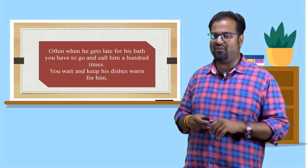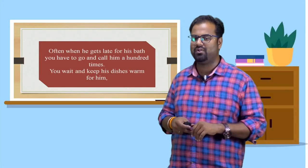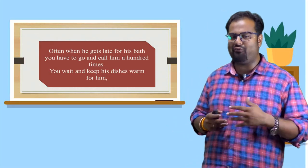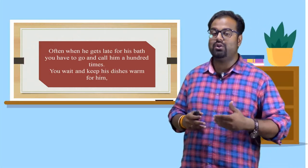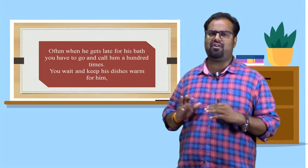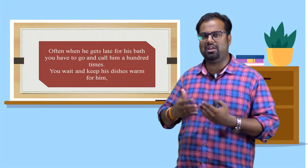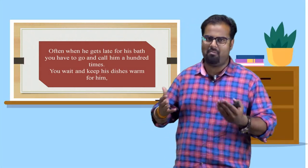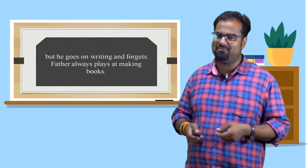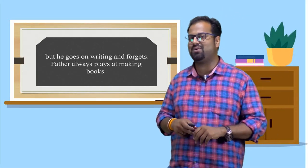Look at the next one. Often when he gets late for his bath, you have to go and call him hundred times. You wait and keep his dishes warm for him. So, the child has observed daily activities at home. He is asking often, again and again, when he gets late for his bath, you have to go and call him hundred times. Mama, you have to always go after father and make him to remind, go for bath. You have to ask him to go for bath. And you keep the dishes, you keep the lunch, you keep the breakfast, you keep the dinner ready, warm. But as he comes late, it all goes waste. But he goes on writing and forgets. Father always plays at making books.